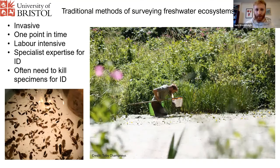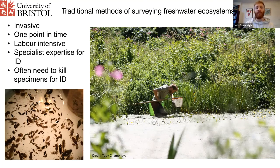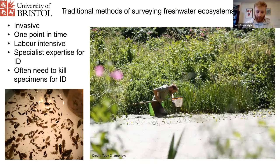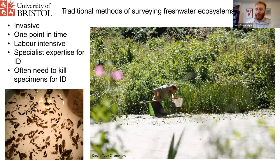There are some problems with these methods. They're quite invasive, sometimes damaging the environment. You only really capture one point in time — unless you go back regularly and sample over a long time period, but that's costly, time consuming, and very labour intensive. In order to ID the species you're collecting, you often need specialist expertise. The species need to be killed so that they can be viewed under a microscope to see the incredibly fine details in their anatomy required to get down to species level. So it's a fantastic way of surveying freshwater ecosystems, but there are some problems with it.